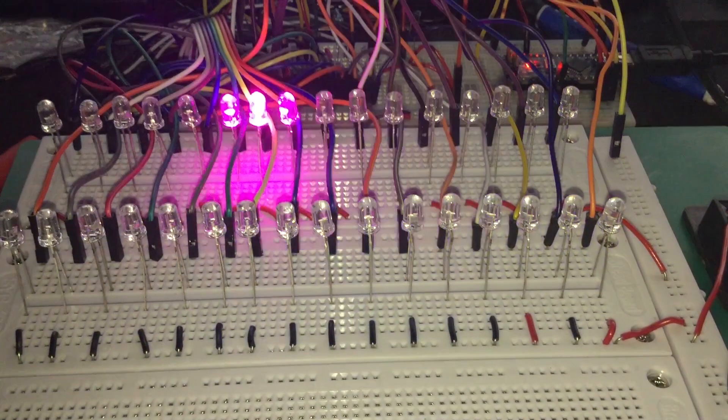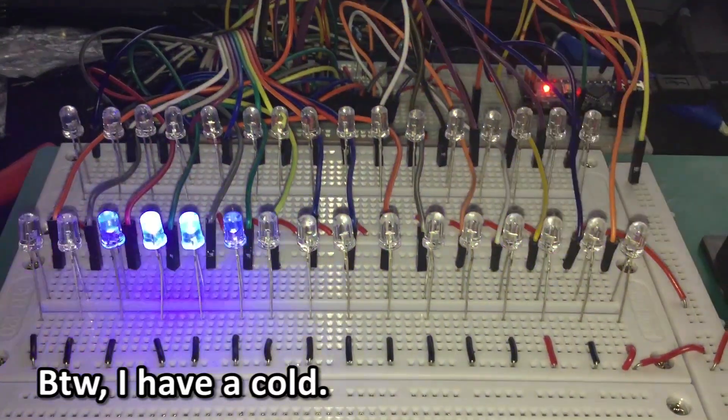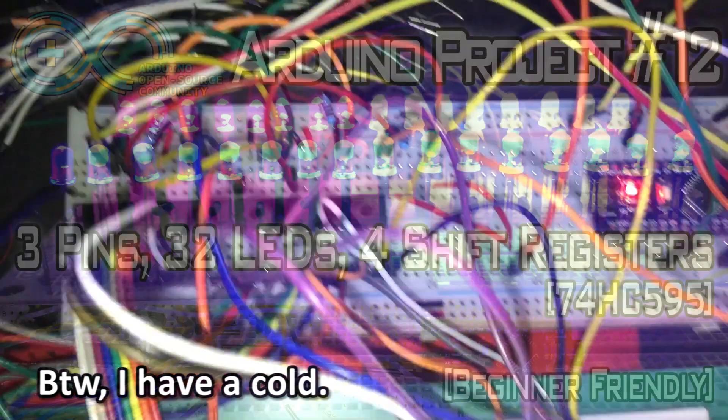Hello YouTube and welcome to Heathen Hacks. Today we are going to daisy chain 2 LED driver ICs that are connected to only 5 pins of an Arduino Nano to control 32 LEDs.